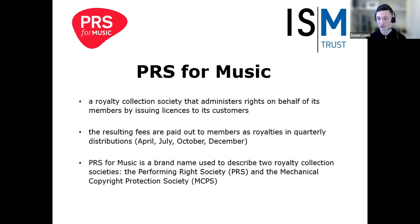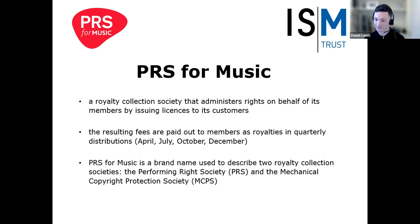PRS for Music is a brand name used to describe two different royalty collection societies. These are the Performing Rights Society, or PRS, which licenses the performing right, and the Mechanical Copyright Protection Society, or MCPS, which licenses the mechanical or reproduction right. The performing right is relevant whenever your music is communicated to the public — for example, if performed live, broadcast, or streamed. The mechanical right is relevant whenever your music is copied, either physically as part of a product such as a CD, or digitally when it's broadcast or streamed. To receive royalties from PRS and MCPS, you need to become a member of each organization separately. A lifetime membership to PRS costs £100, and it's the same for MCPS — a separate payment of £100.